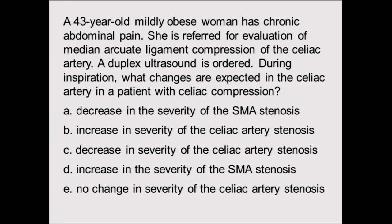43-year-old mildly obese woman with chronic abdominal pain. She was referred for diagnosis of median arcuate ligament syndrome, which compresses the celiac artery. A duplex ultrasound was ordered. During inspiration, what change is expected to the celiac artery in this patient with celiac artery compression? A: decrease in severity of SMA stenosis. B: increase in severity of celiac artery stenosis. C: decrease in severity of celiac artery stenosis. D: increase in velocity or severity of SMA stenosis. E: no change in severity of celiac artery stenosis.